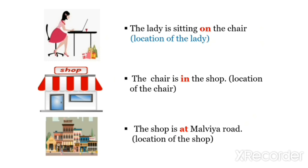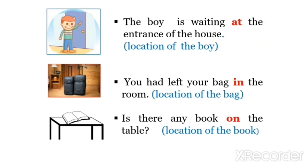इस picture में हमें lady की location के बारे में पता चल रहा है कि lady chair के ऊपर बैठी है। इसे बताने के लिए हमने 'on' का use किया है। अब ये chair कहाँ है? The chair is in the shop. यहाँ chair की location बता रहे हैं कि chair shop के अंदर है। तीसरे sentence में: The shop is at Malviya Road — यहाँ shop की location बता रहे हैं कि shop Malviya Road पर स्थित है। और examples देखते हैं।